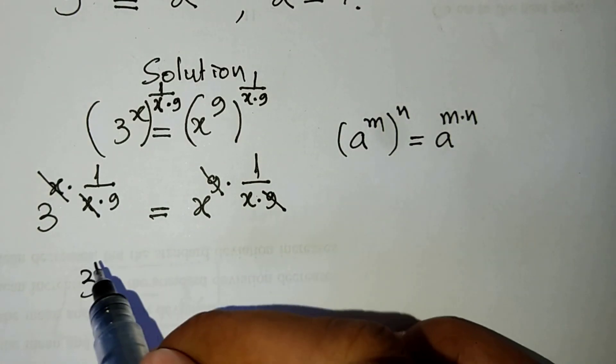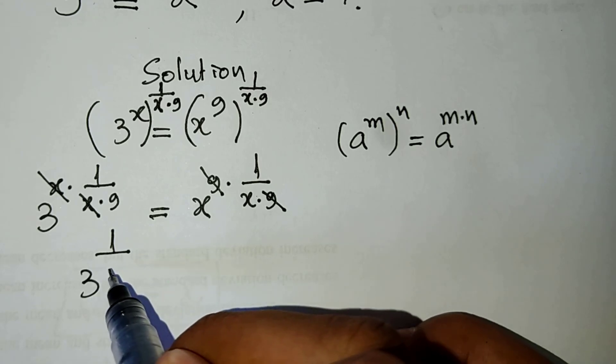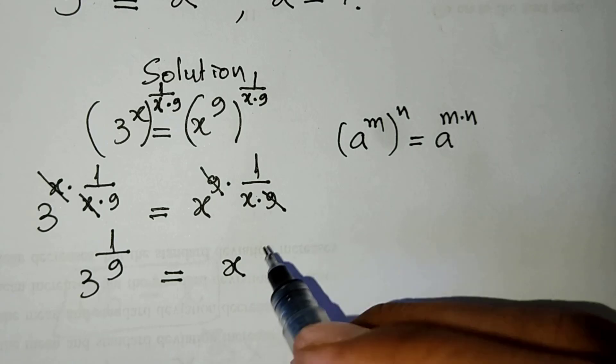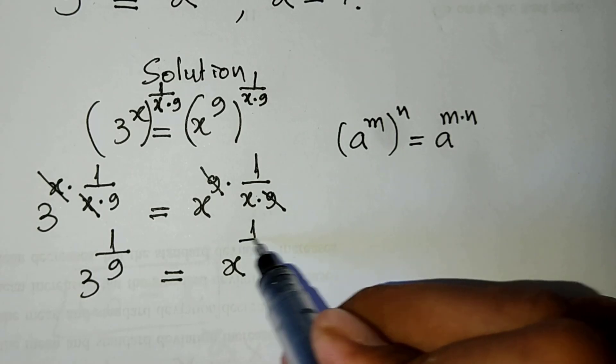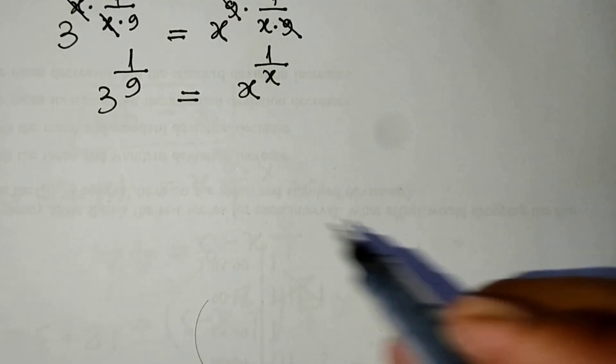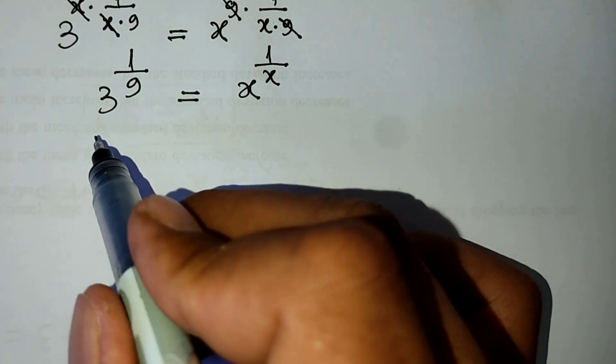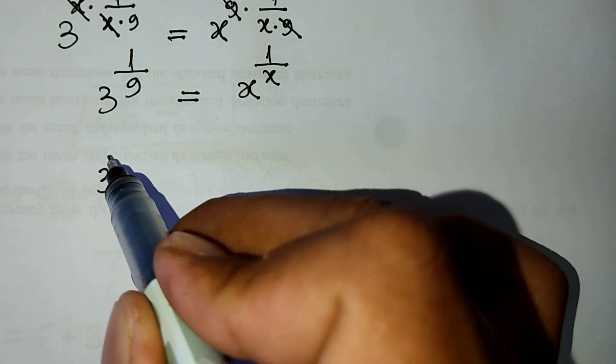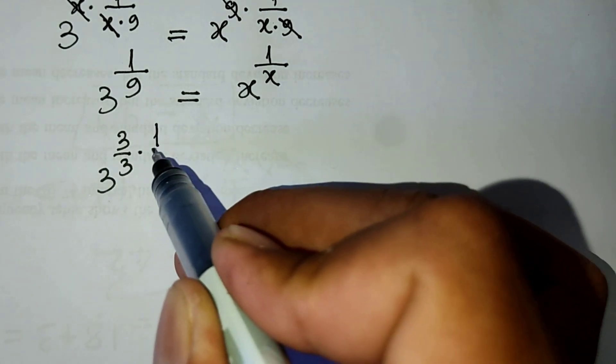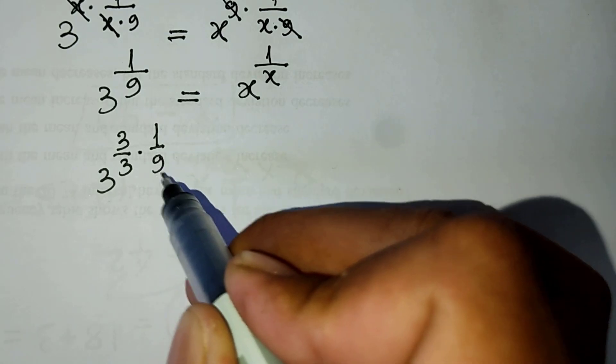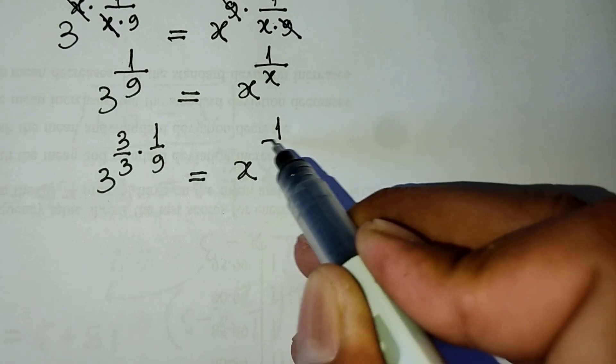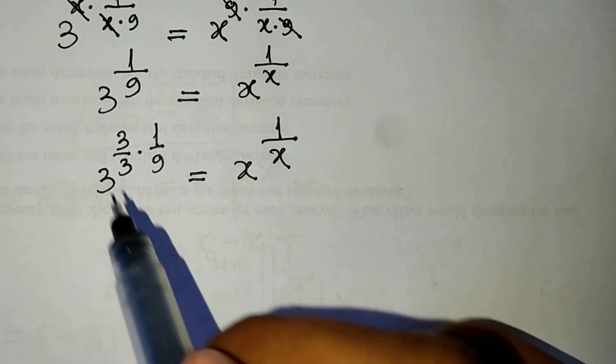And next step, here is, I can write 3 power 3 divided by 3 times 1 divided by 9 and equal to x power 1 divided by x.